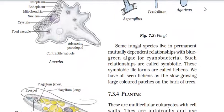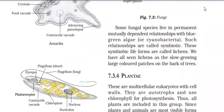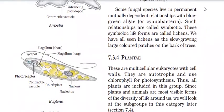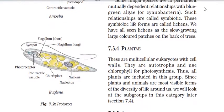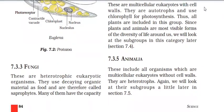Now, Plantae. Plantae are multicellular eukaryotes with a cell wall made up of cellulose. Their mode of nutrition is autotrophic because they use chlorophyll for photosynthesis. Plants and animals are the most visible forms of diversity of life around us. Because there is so much diversity in this group, Plantae is divided into subgroups.